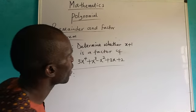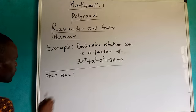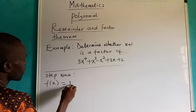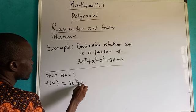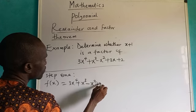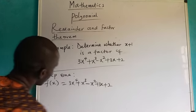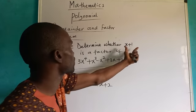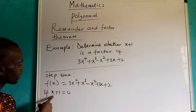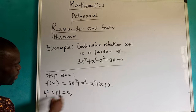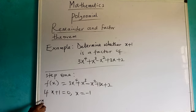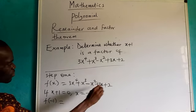We are given S plus one. Given the polynomial F(s), we should determine if S plus one is a factor. To do that, I will say if S plus one equals zero, we need to find the value of S. Making S the subject gives us minus one. So the value of S is minus one. We now substitute F(−1) into the polynomial.